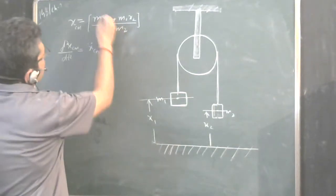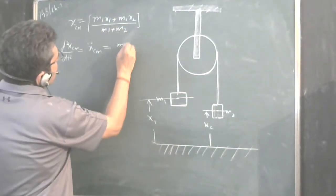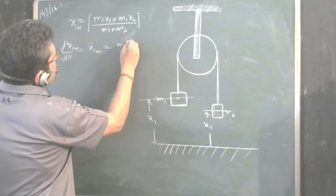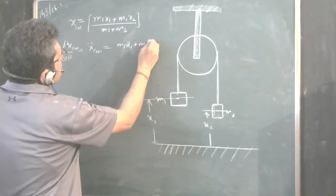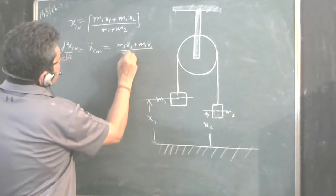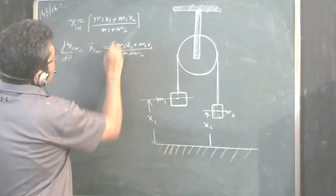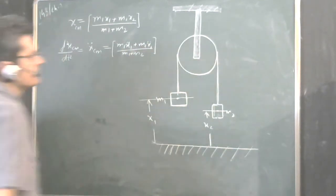We write it as x double dot cm would be equal to, this is constant, but this one is variable. So, M1 x1 double dot plus M2 x2 double dot upon M1 plus M2. This is the acceleration of the center of mass.